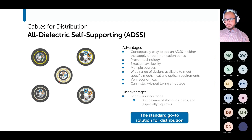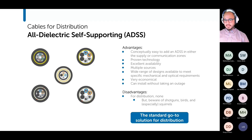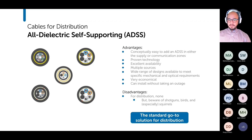ADSS makes the most sense for distribution — you see it everywhere. It's a proven technology with a wide range of designs as discussed, and you can install it without taking an outage. For distribution there aren't really any disadvantages, though like other cables it is vulnerable to damage from birds, shotguns, and especially squirrels. We see a lot of rodent problems. But it's the standard go-to solution for distribution.